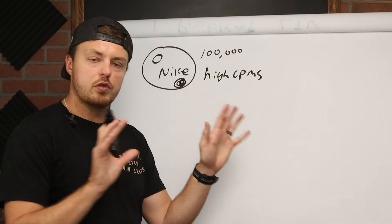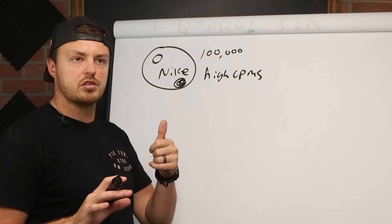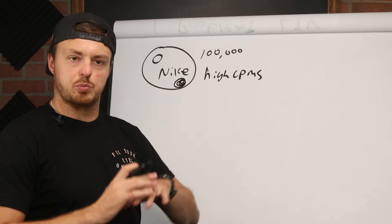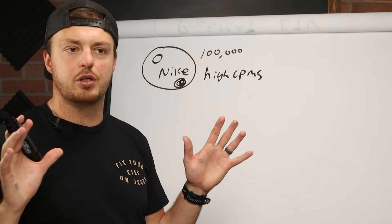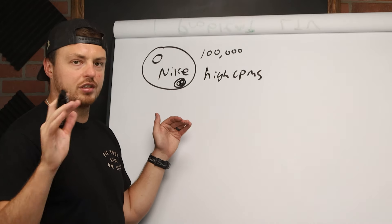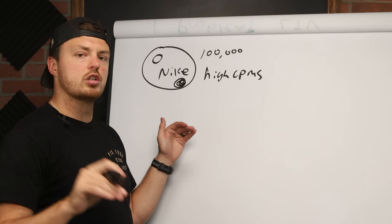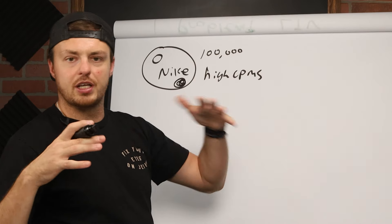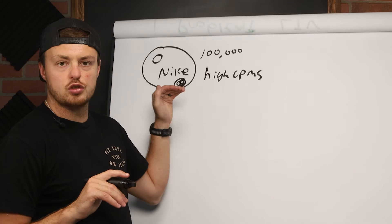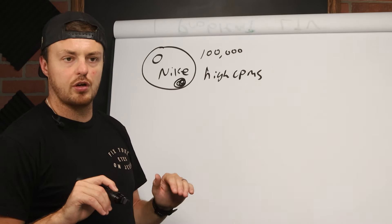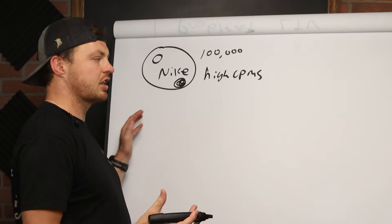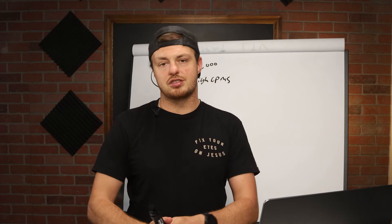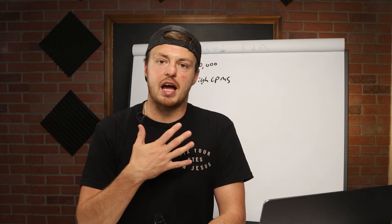Let me ask you this: interest targeting seems logical, lookalike seems logical — but why does broad actually make sense? Broad is going to give Meta the most amount of data. We're going to talk specifically about how you can train Meta — Facebook — to go after your audience while giving it as much data as possible. We do not know better than the platform.